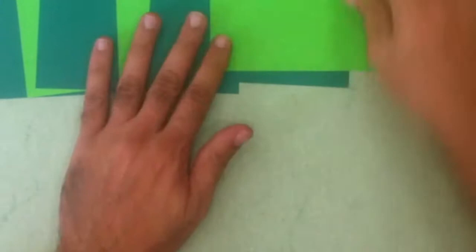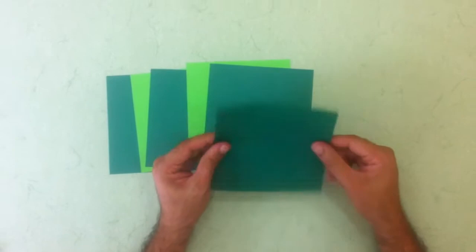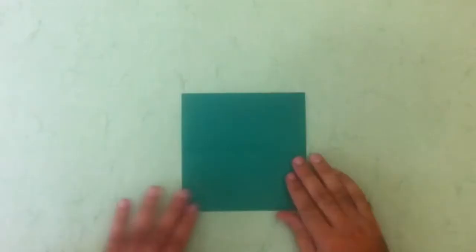For that we need 6 units. I'm using a duo color kami with green light and dark on both sides.